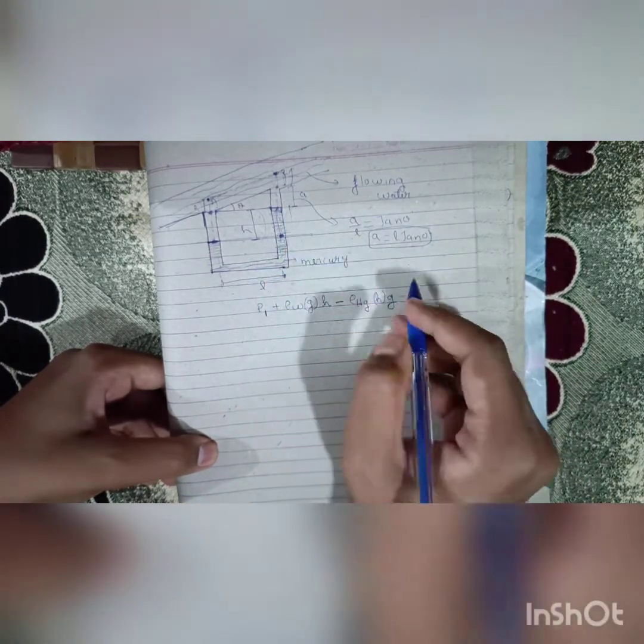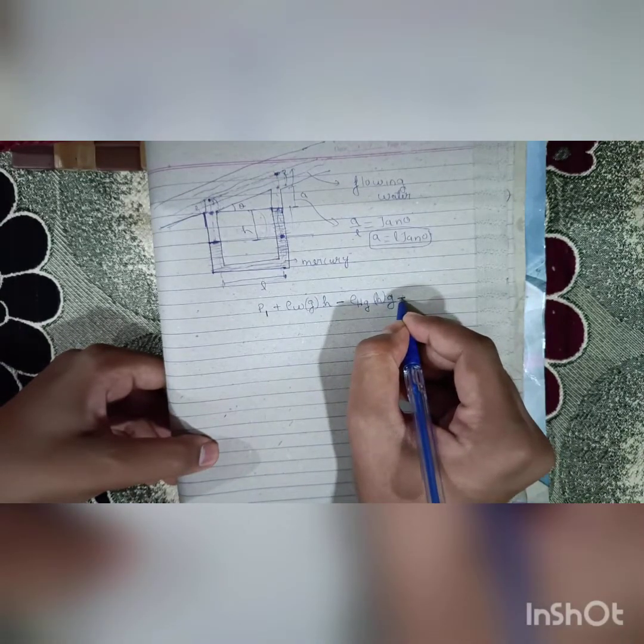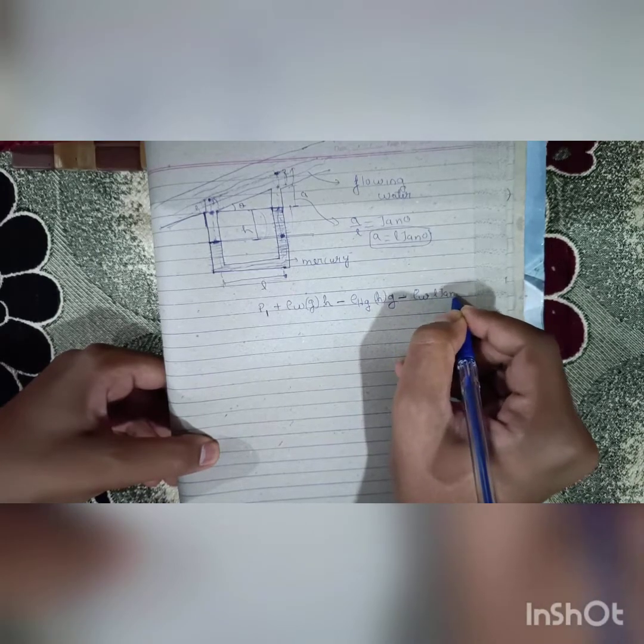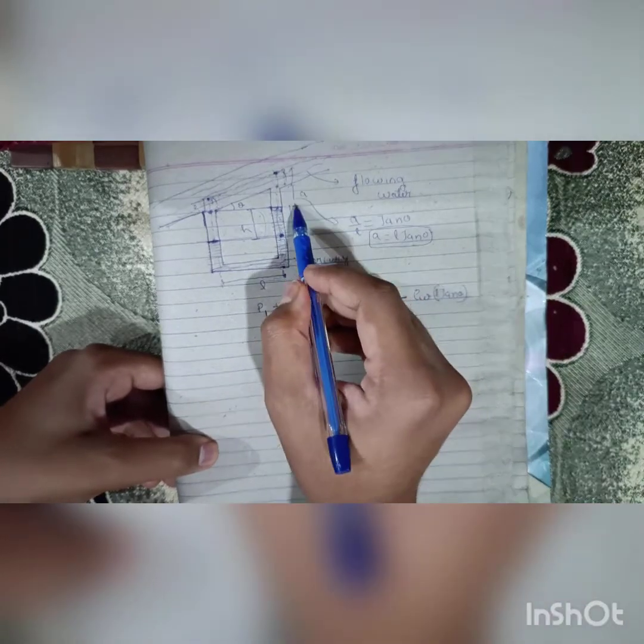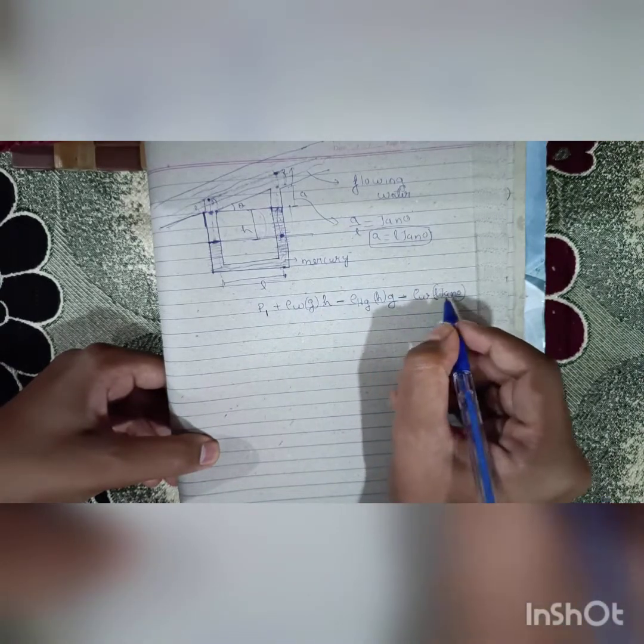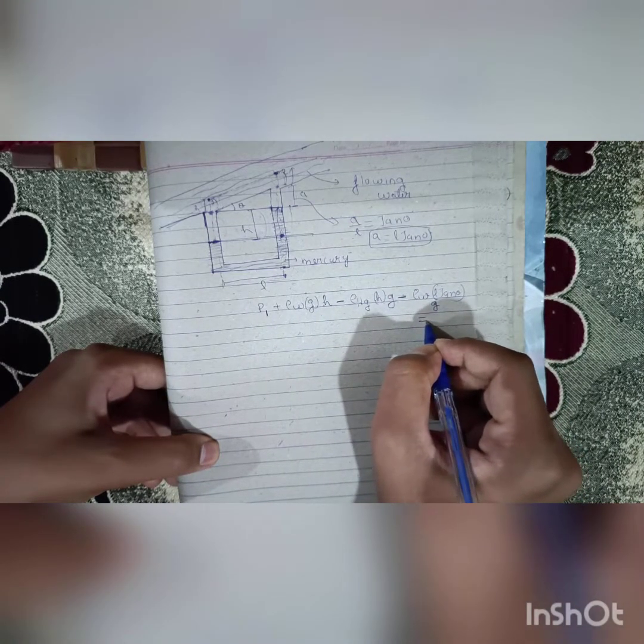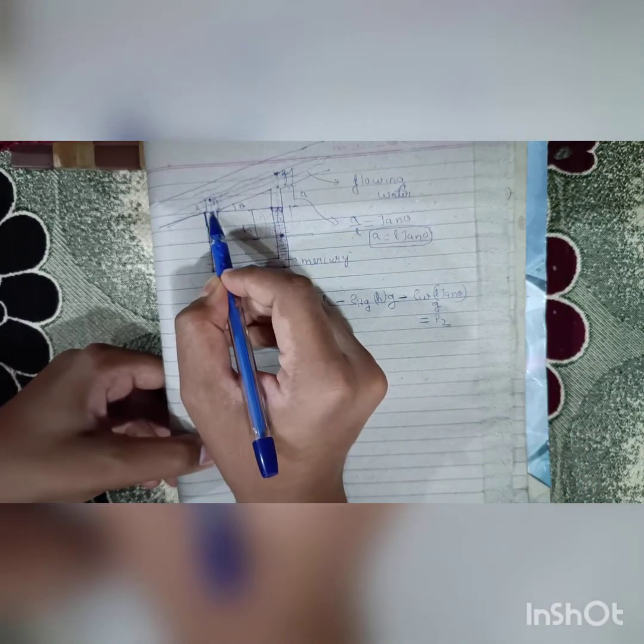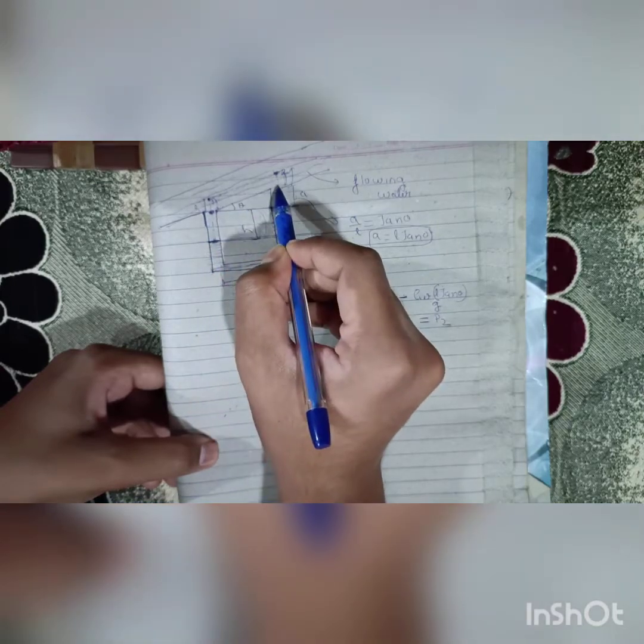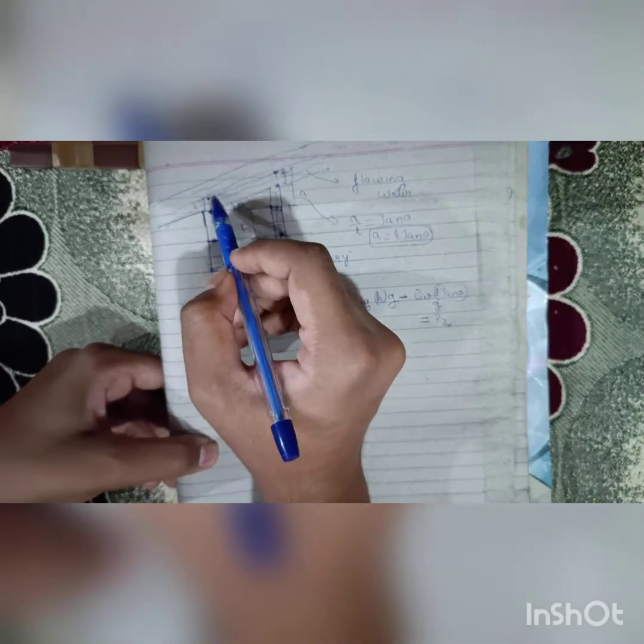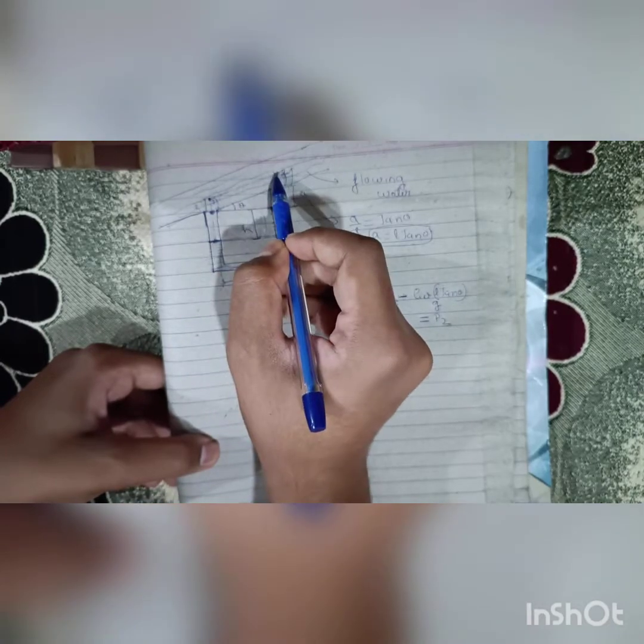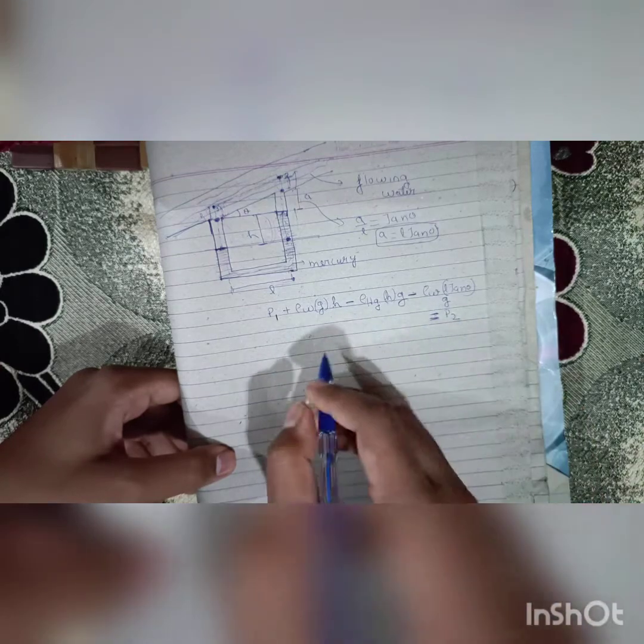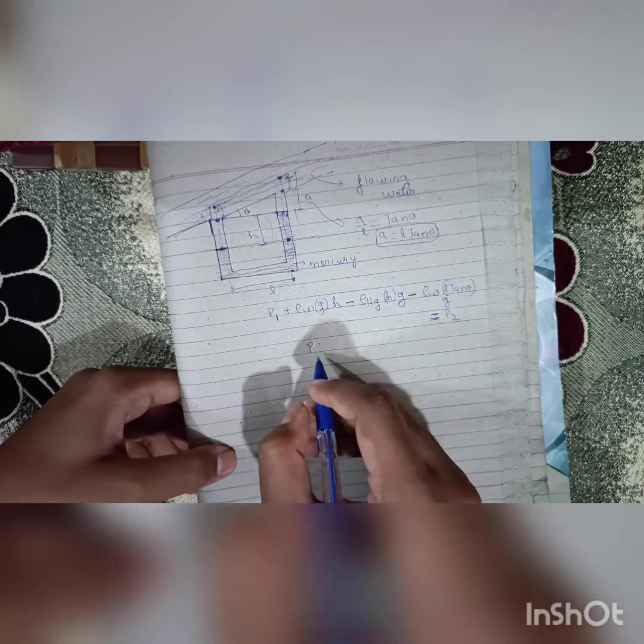This length is l tan theta. We are traveling in water opposite to gravity, so negative rho water l tan theta times g. We will equate it to pressure at point two. We have ignored this and directly found the pressure difference at this point, which ultimately will be the pressure difference between the two points.